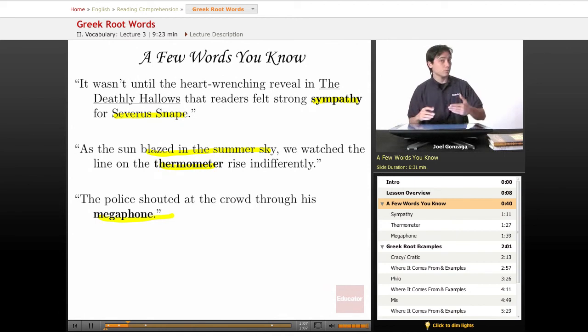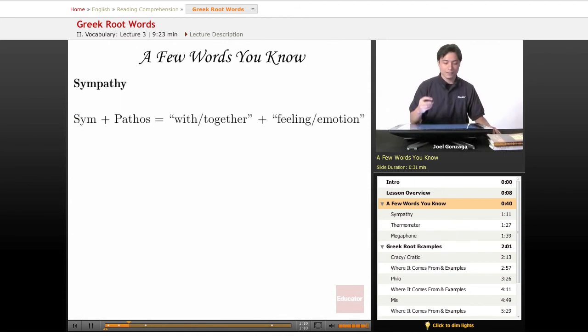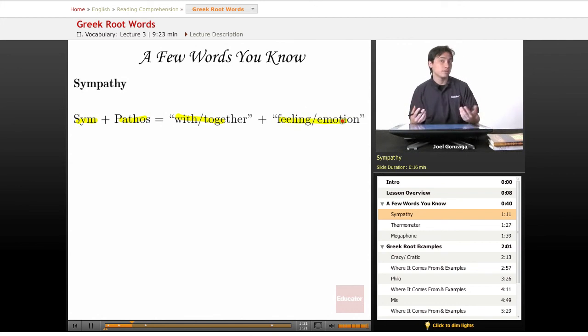Let's go through each one of these words one at a time. Sympathy comes from two Greek words: sym, which means with or together, and pathos, which is feeling or emotion. If you have sympathy for someone else, you feel what they feel.